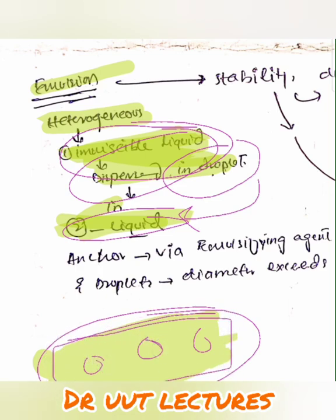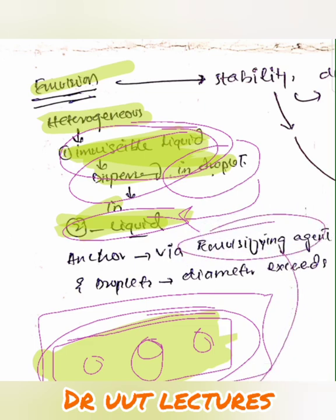A question arises: if the droplets are immiscible in the liquid, how is the system actually formed? The answer is simple — we have an emulsifying agent. By means of this emulsifying agent, the droplets form a bond with the second phase, the liquid phase. The emulsifying agent helps the two phases to join together.